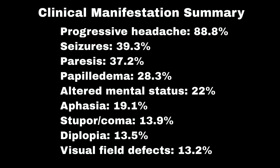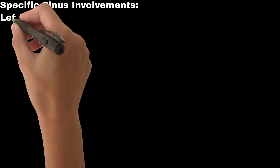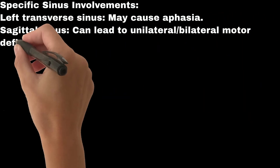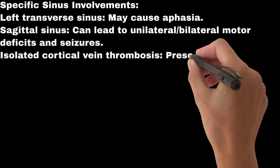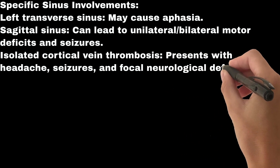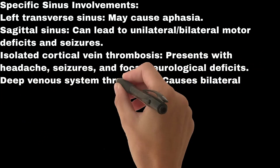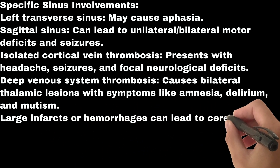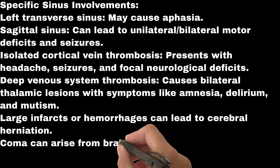Clinical manifestations are summarized as: progressive headache in 88.8%, seizures in 39.3%, paresis in 37.2%, papilledema in 28.3%, altered mental status in 22%, aphasia in 19.1%, stupor or coma in 13.9%, diplopia in 13.5%, and visual field defects in 13.2%. Regarding sinus-specific symptoms: left transverse sinus involvement may cause aphasia; sagittal sinus can lead to unilateral or bilateral motor deficits and seizures; isolated cortical vein thrombosis presents with headache, seizures, and focal neurological deficits; and deep venous system thrombosis causes bilateral thalamic lesions with amnesia, delirium, and mutism. Large infarcts or hemorrhages can lead to cerebral herniation, and coma can arise from brainstem or thalamus involvement, or generalized seizures.